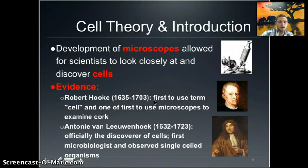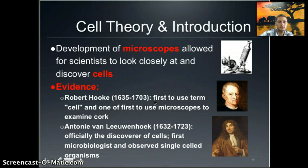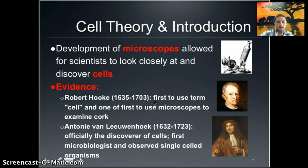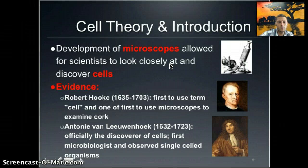Let's get into a little bit about cell theory and how we started to understand cells. An important theme is that as technology improves we're able to make new discoveries, and the development of the microscope was a really important tool in analyzing cells at a microscopic level. The development of the microscope allowed for the discovery of cells. Robert Hooke was the first to use the term 'cell,' using microscopes to look at cork. Leeuwenhoek, another scientist, is officially considered the discoverer of cells and the first microbiologist — he observed single-celled organisms. Both individuals used microscopes to look at cells.